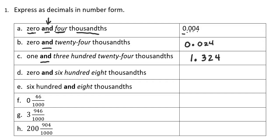Let's skip down to the fraction question. Question F shows that I have zero and forty-six thousandths. That fraction is read the same way as the word form. So I have zero in my ones place, 'and' would be the decimal point. Now I need the forty-six to fall in the thousandths place, so I'll put a zero, four, six — that puts my six in the thousandths place. So this number is read as zero and forty-six thousandths.